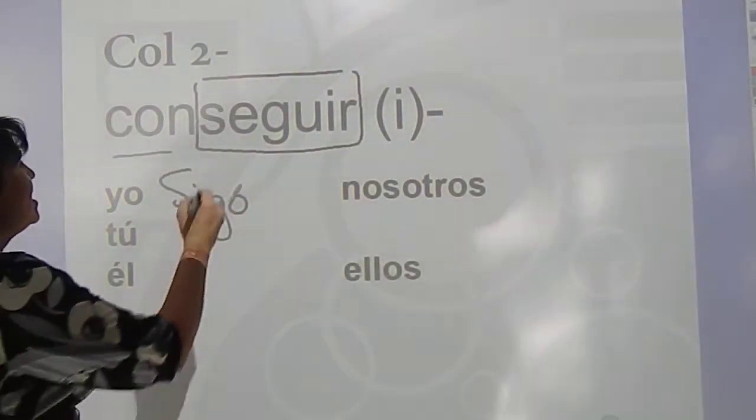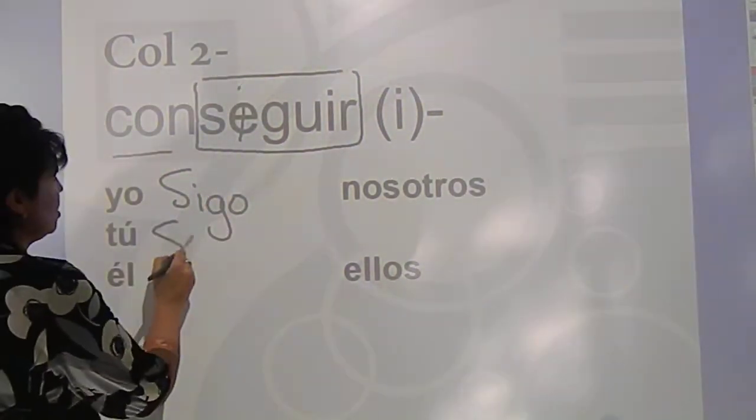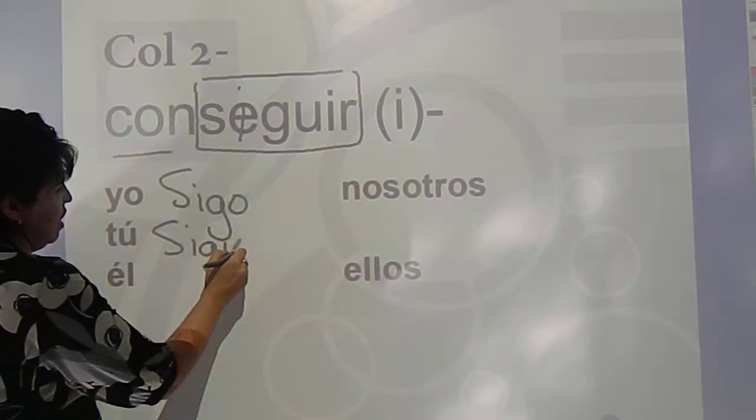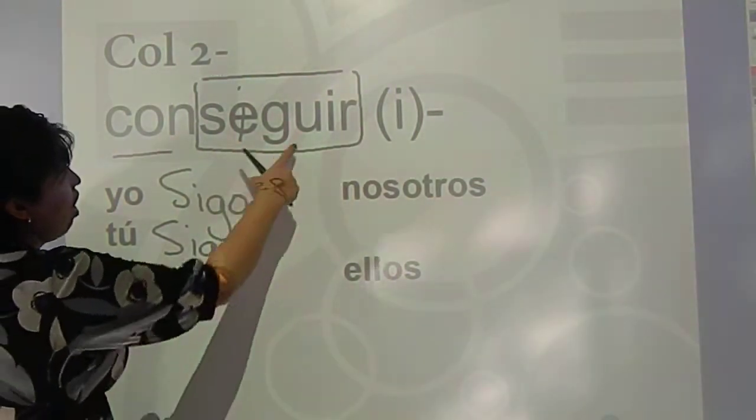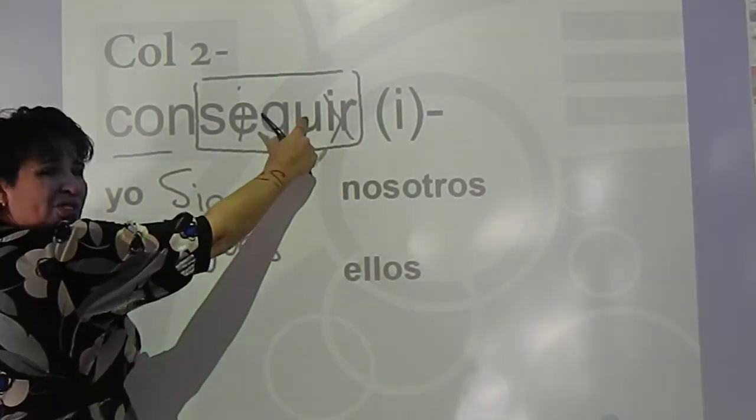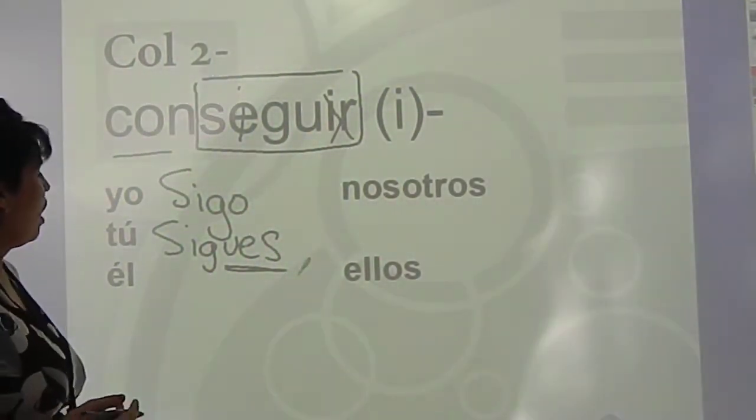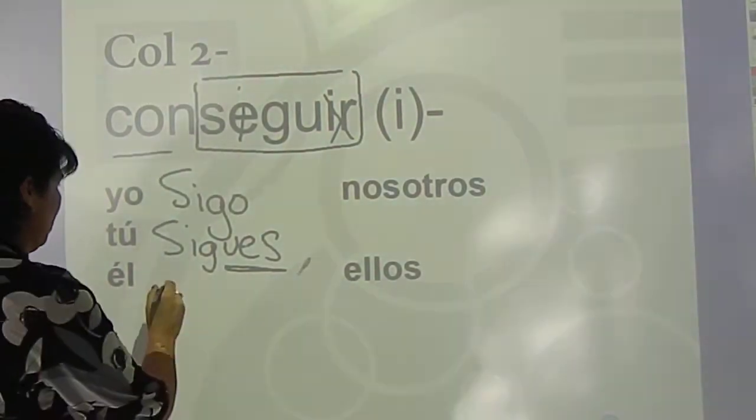Second off, seguir is an E to I stem changer. So as you can see, all I'm taking off is the I-R. The U stays there. This looks awkward to some, but this is the way you conjugate.